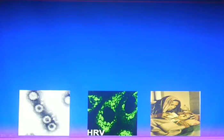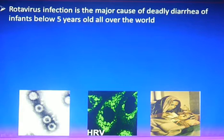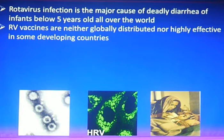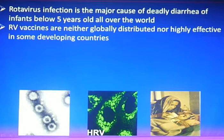Virus infection is a major cause of deadly infections in children below 5 years old worldwide, and is responsible for about 500,000 deaths annually. Vaccines are thought to be a final strategy to control virus infection. At present, two vaccines, namely Rotarix and Rotateq, show an underlying effect in the world. However, they are not highly effective in some developing countries.